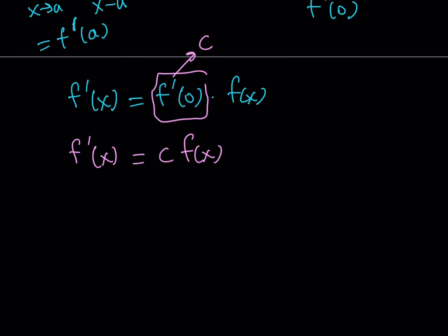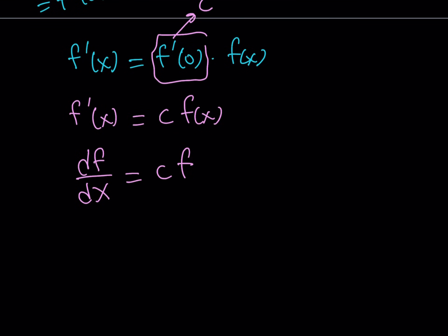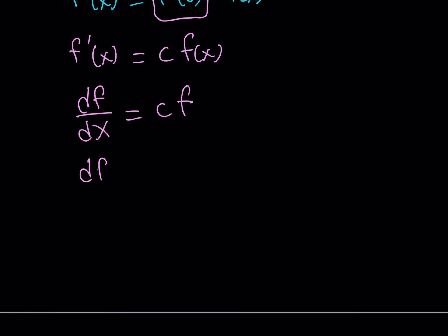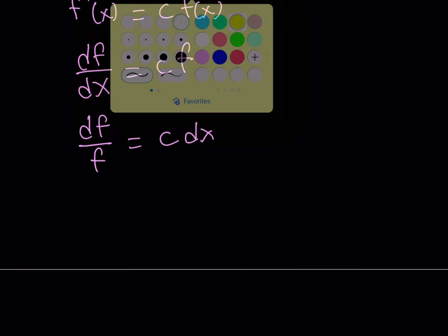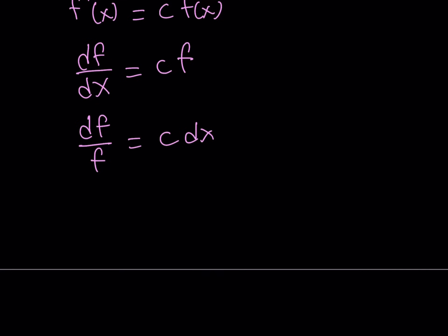Let's look at the next step. I'm going to write f prime of x as df over dx, and f of x simply as f. c is a constant, so I'd like to separate the variables: df over f equals c dx. When you have a separable differential equation, you can solve it by integration, and you can do that here as well.